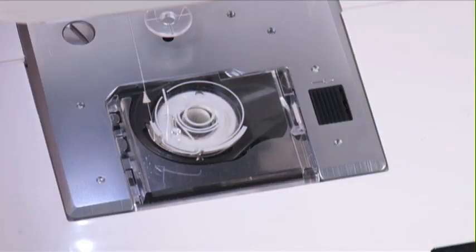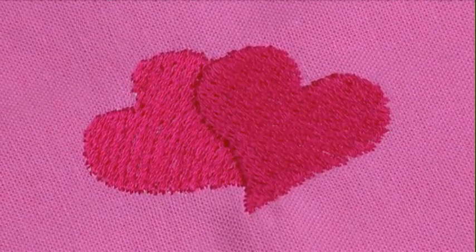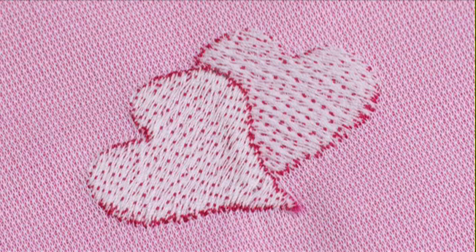It is not necessary to adjust bobbin tension as this is preset at the factory. If the thread tension is adjusted properly, a small amount of needle thread will show through on the underside of the fabric.